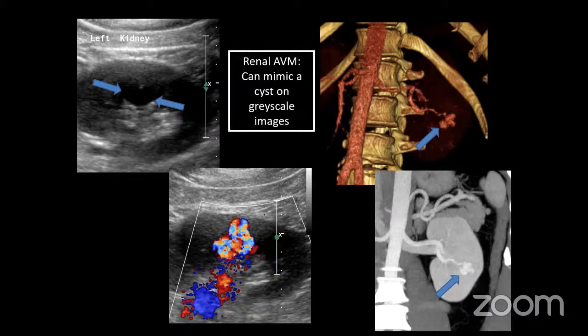There's also a particular neoplasm that can mimic a cyst — lymphoma. Lymphoma can sometimes look cystic in the kidney but should have some internal vascularity, particularly in larger lesions. The most common appearance for renal lymphoma is multiple masses; you can have a solitary lymphomatous mass, but usually it's multiple. So the two things to look for when you think you have a cyst: is there flow? Is it actually an AVM or renal lymphoma?